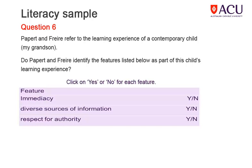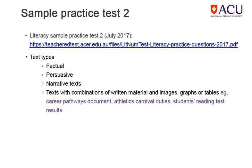Now for the last question from the sample test. The focus is on the quote itself. By now you may be familiar with the paragraph, so you may have scanned Papier and Freya's quote to locate specific information. You may realise that the words and phrases from the question are not in the text, so you have to look for synonyms — words and phrases expressing similar ideas. Immediacy? Yes: 'My grandson who is used to finding knowledge when he wants to and can get it when he needs it.' Diverse sources of information? Yes: 'And can get in touch with other people and teachers.' Respect for authority? No: 'These children will not sit quietly in school and listen to a teacher.'